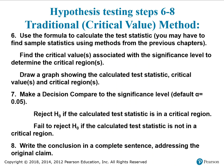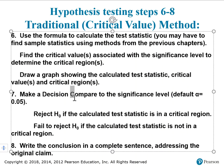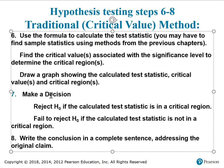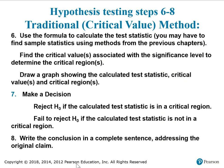If you're doing the critical value method, use the formula to calculate the test statistic. Find the critical value or values associated with the significance level to determine the critical region or regions. Draw the graph and place the values. Make a decision — reject H₀ or fail to reject H₀ based on whether the calculated test statistic falls in the critical region. Then write the conclusion in a complete sentence addressing the original claim.